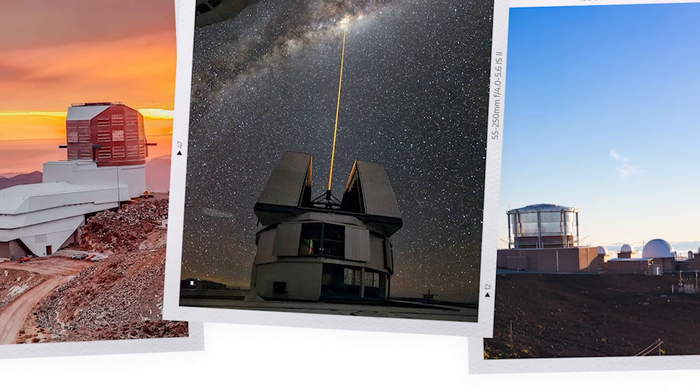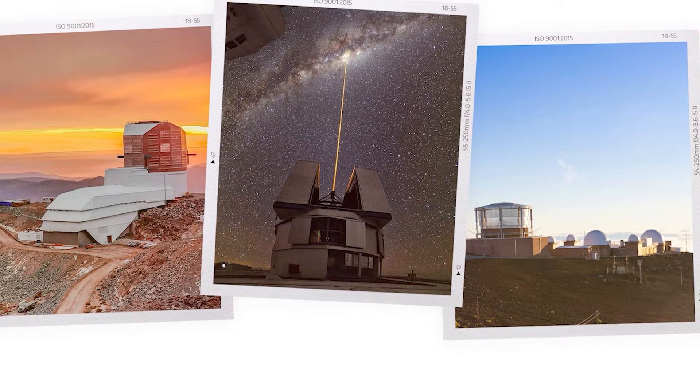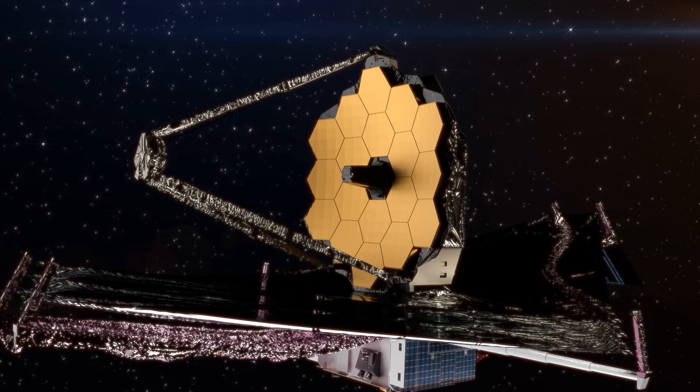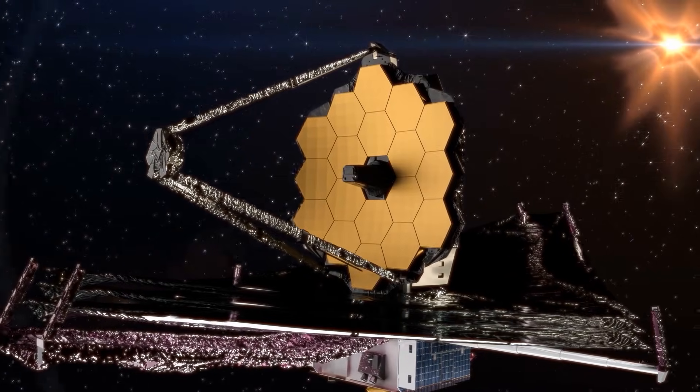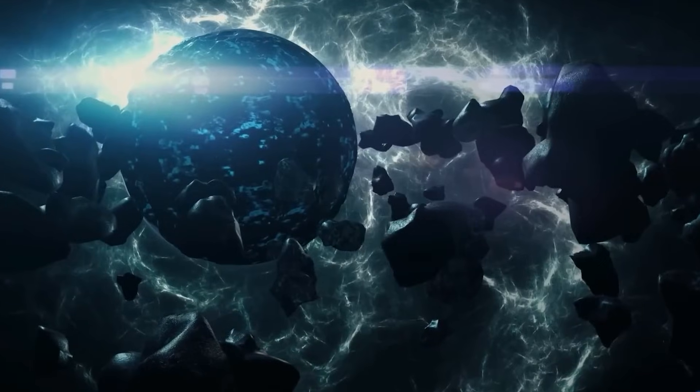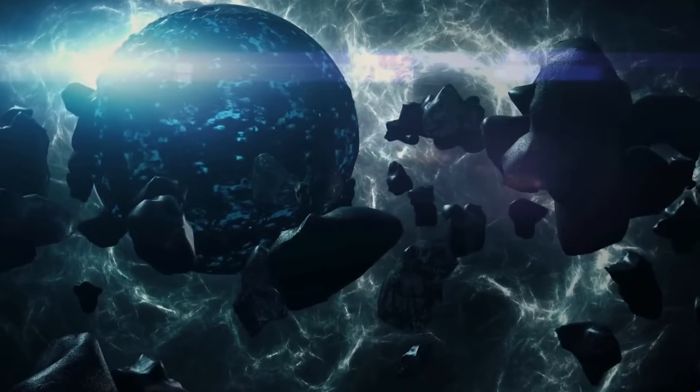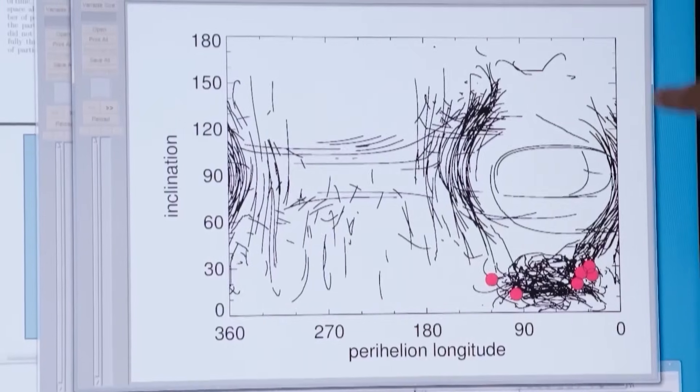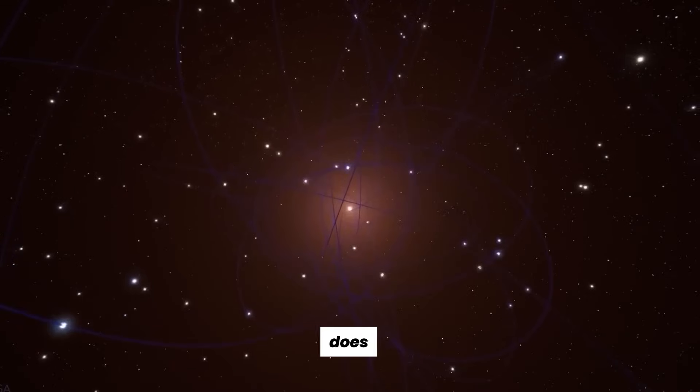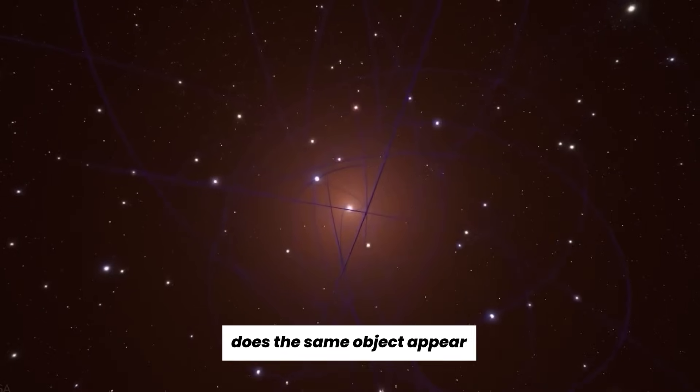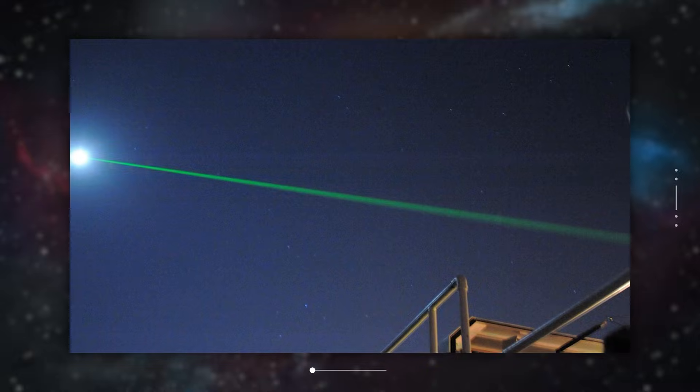But Rubin isn't the only one watching. Other world-class observatories like Subaru in Hawaii, the Very Large Telescope in Chile, and even the James Webb Space Telescope are capable of following up. They just need a reason to point their mirrors in the right direction, at the right moment. And now, they have one. The test is simple, but decisive. Does the same object appear again? Does it drift across the sky, year over year, exactly as predicted by the models?